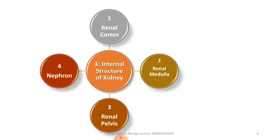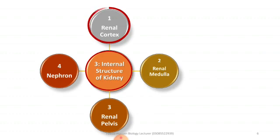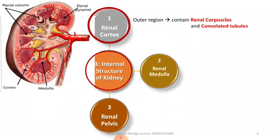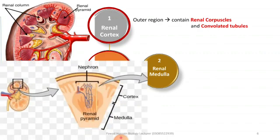Now moving to the internal structure of the kidney. The first region is the renal cortex. The renal cortex is the outer region of the kidney that contains the renal corpuscles and convoluted tubules.